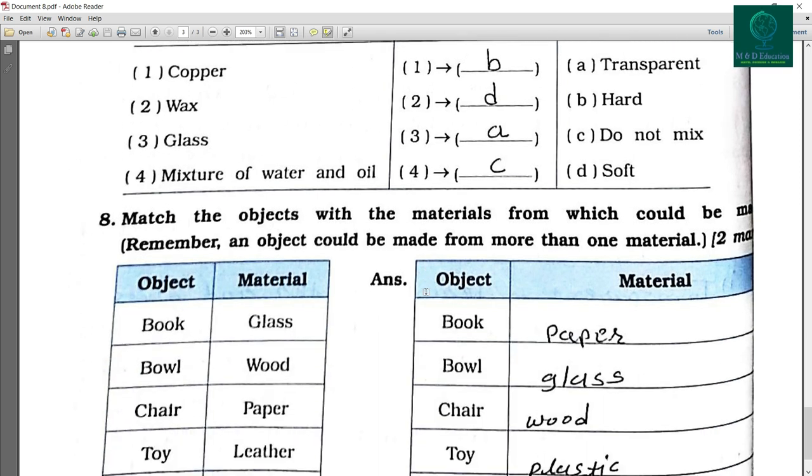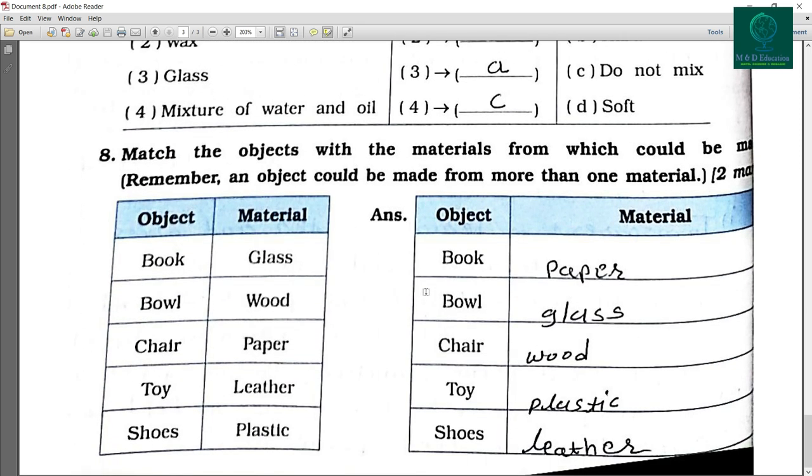Now the last question. Match the objects with the materials from which could be made. Remember an object could be made from more than one material. So here is given objects and materials.